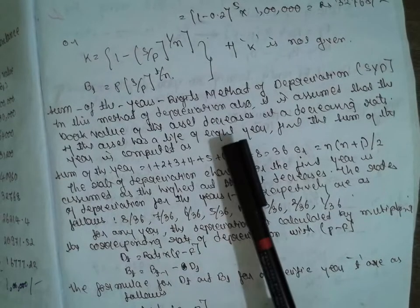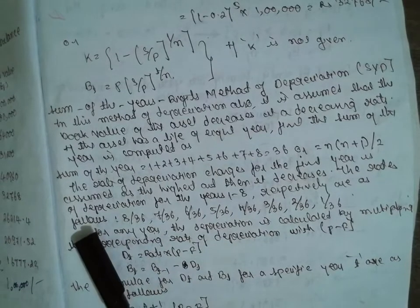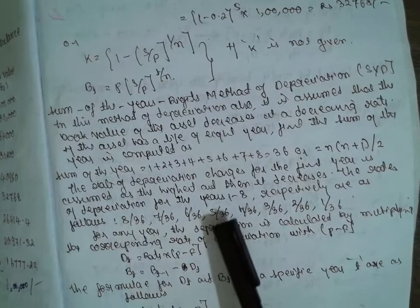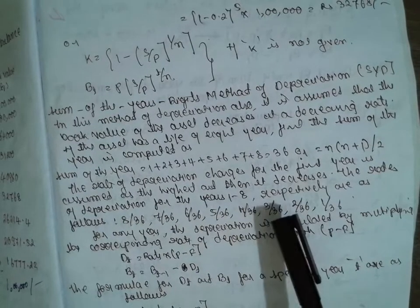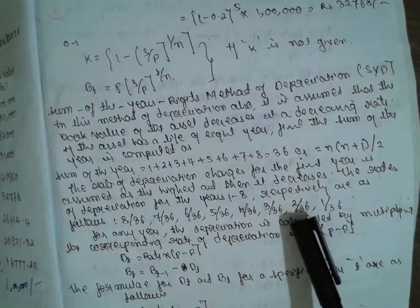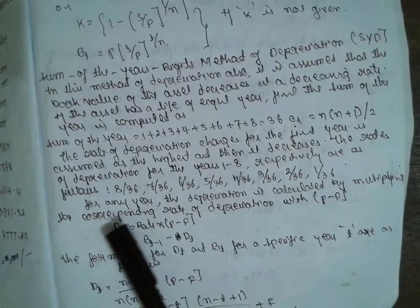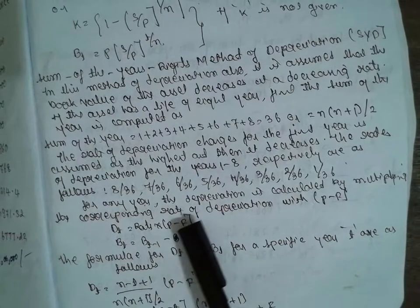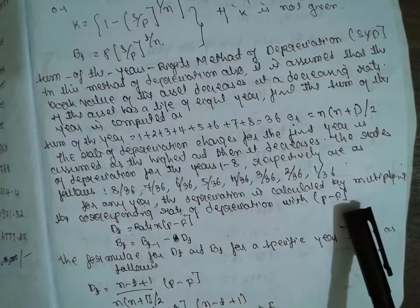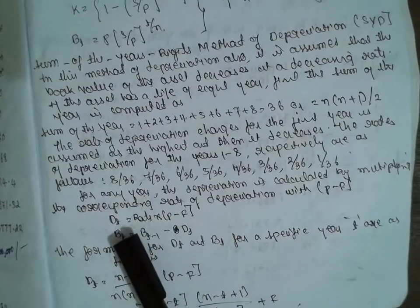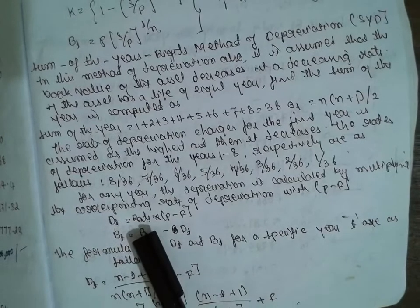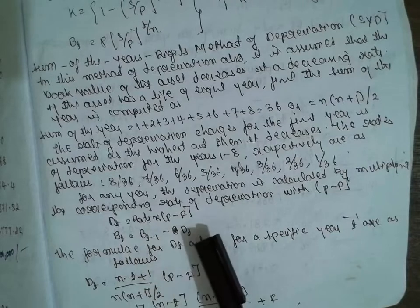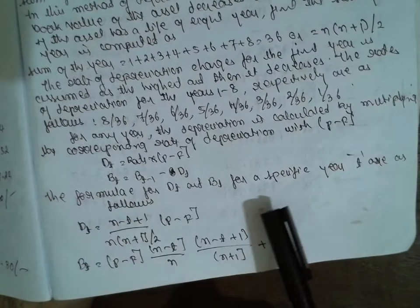Assuming n = 8 years, the depreciation rates for each year divided by 36 are: 8/36, 7/36, 6/36, 5/36, 4/36, 3/36, 2/36, and 1/36. For the table method, depreciation dt = rate × (P − F), and book value bt = bt−1 − dt. You can also use the direct formulas.